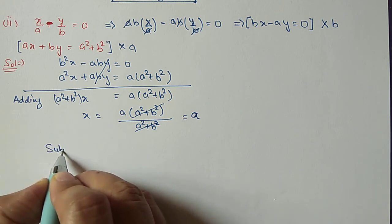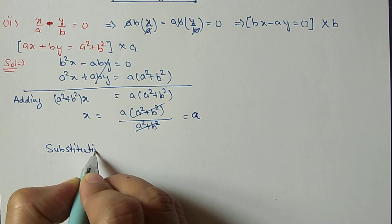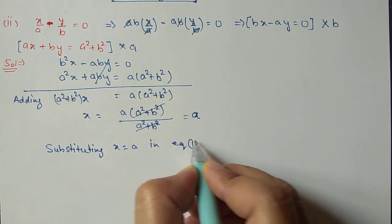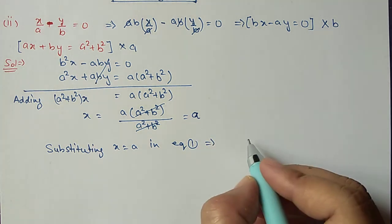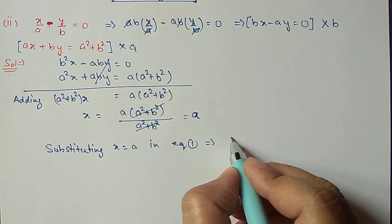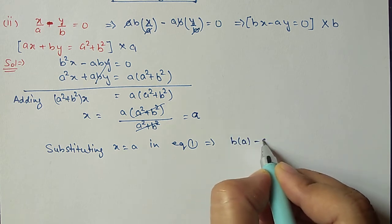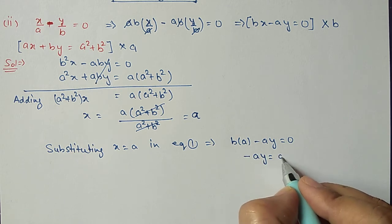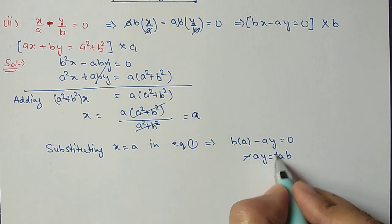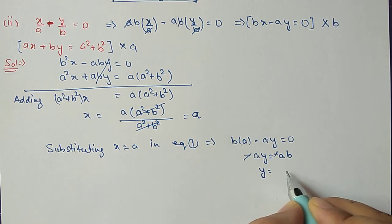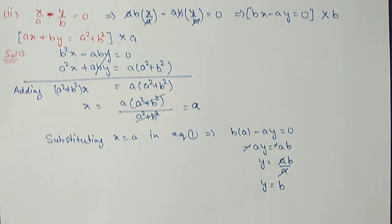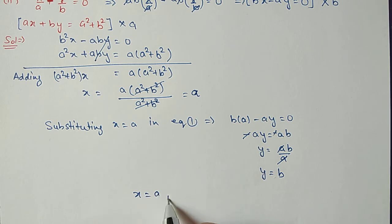It cancels out, so we get X equal to A. We substitute this value into equation 1 in its simplest form: b times a minus a·Y equal to 0, so minus a·Y equals ab minus ab. Simplifying: Y equals ab divided by a, and a cancels, giving Y equal to b. So X value is A and Y value is B for this question.